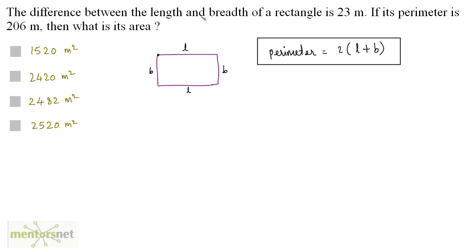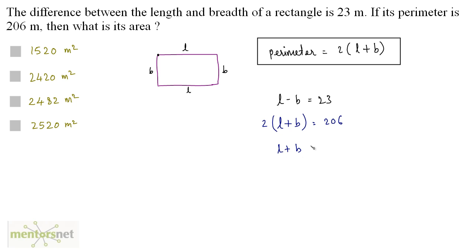We have been given the difference between the length and breadth, so L minus B equals 23 meters — that's equation 2. The perimeter is 206, so twice of L plus B equals 206, meaning L plus B equals 103 — that's equation 1.